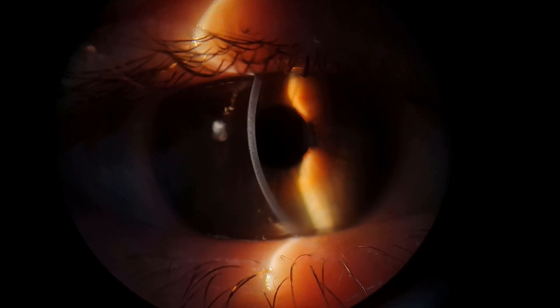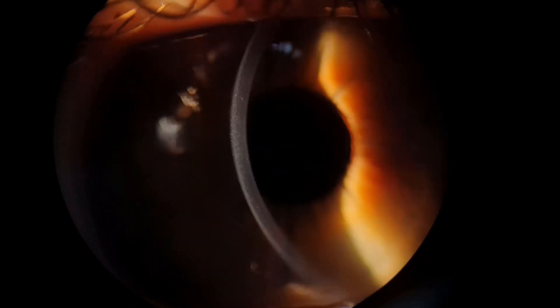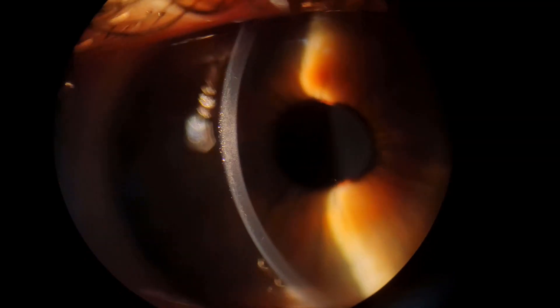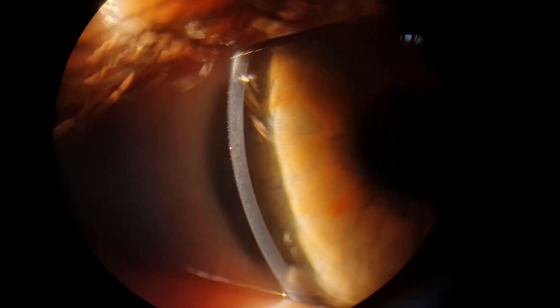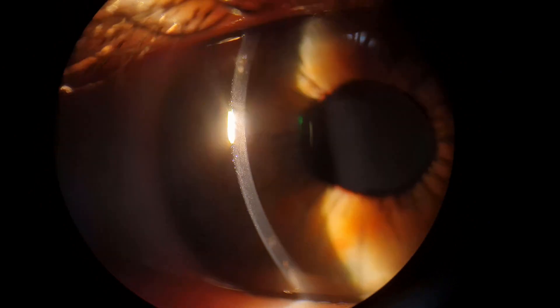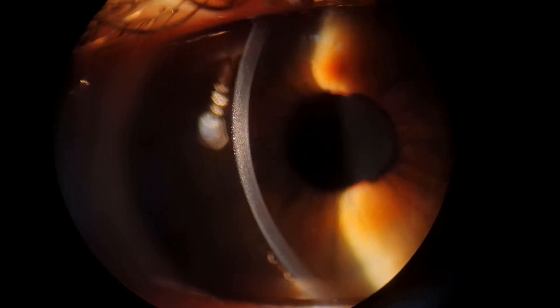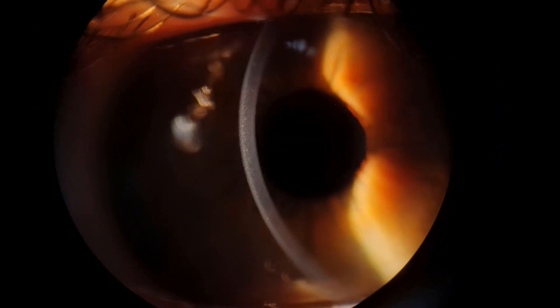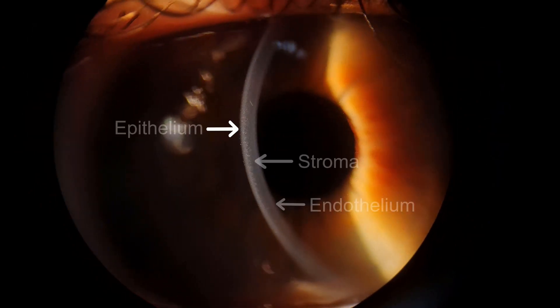As you can see, it optically dissects the cornea and you can see a cross section. You can use increased magnifications to help you find specific structures such as the epithelium, stroma, or endothelium.